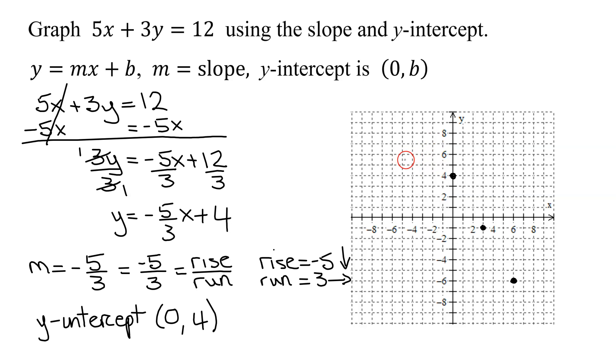Now if I wanted some points to the left of the y-axis, I reverse both of these. So I'm going to go up 5 and to the left 3. From my y-intercept up 5: 1, 2, 3, 4, 5, and then left 3: 1, 2, 3.